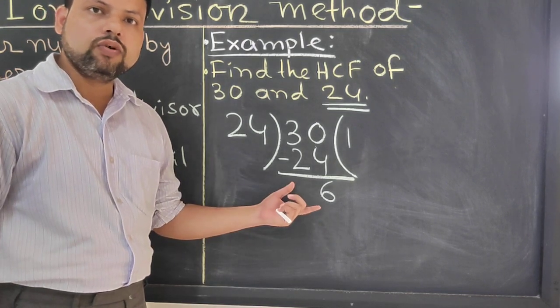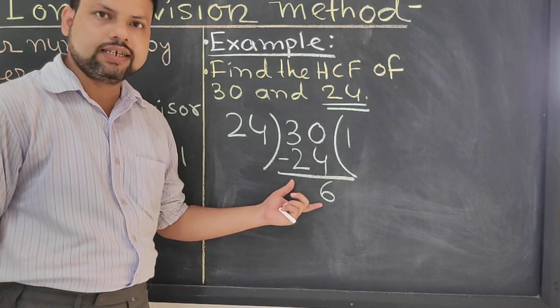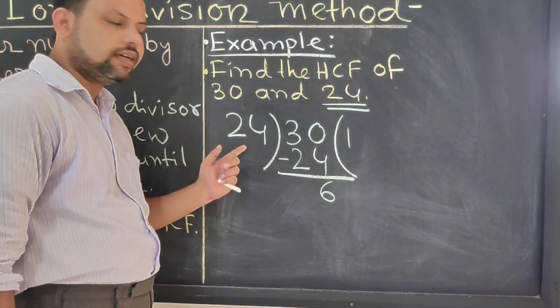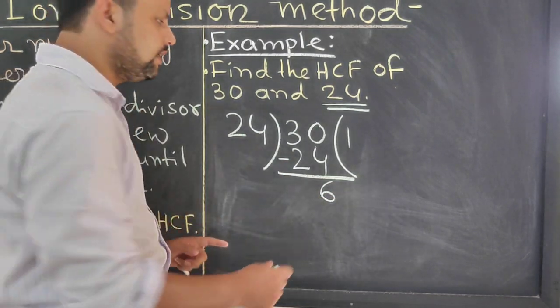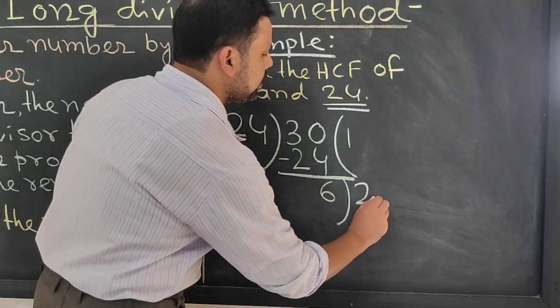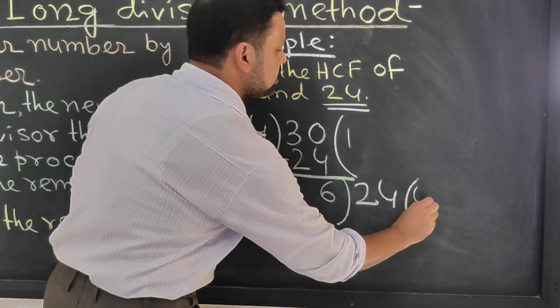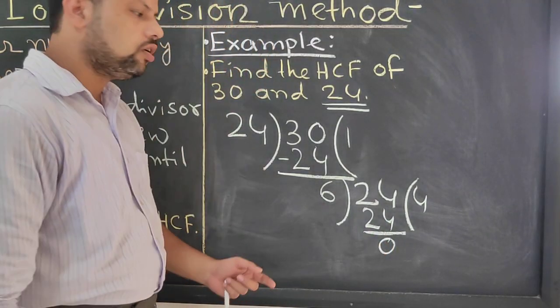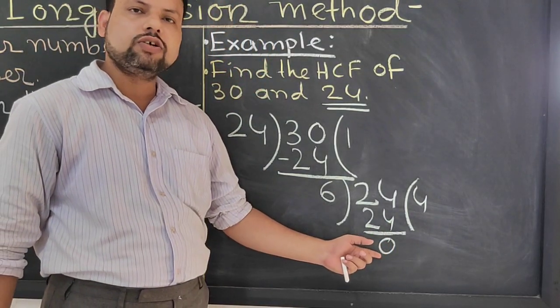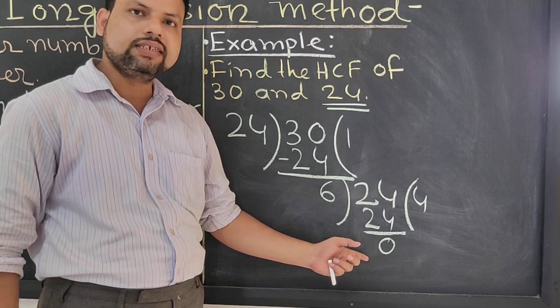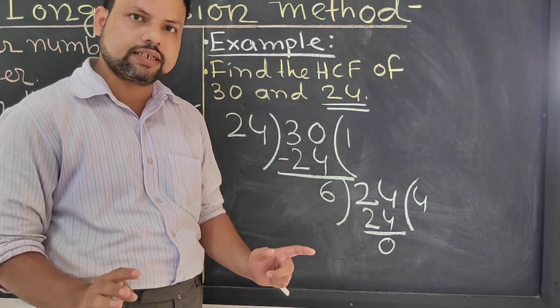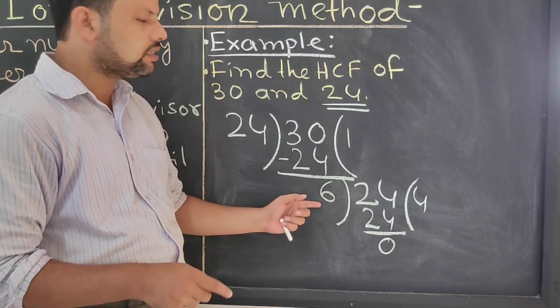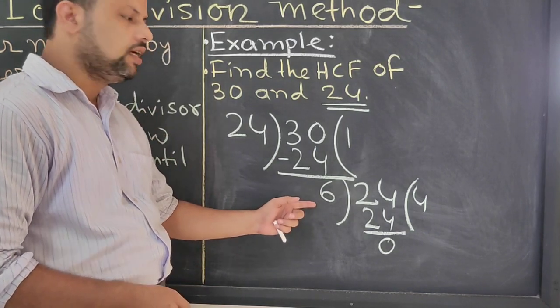Now this remainder will act as divisor. And not only this, previous or original divisor act as dividend. So divide this one. 24 divided by 6 is 4, times 6 is 24. Remainder is 0. So we have already got 0 as remainder. That means your process completed. Now we have to think about the HCF. The last divisor will be your HCF.